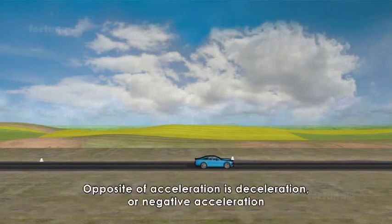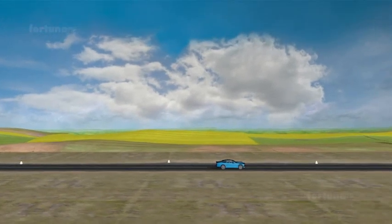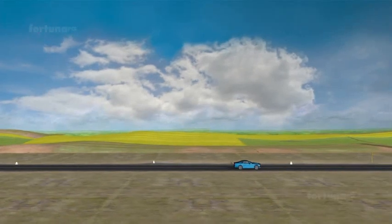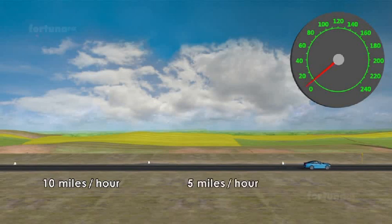The opposite of acceleration is deceleration or negative acceleration, which means we are decreasing the velocity. If the car begins its trip at a velocity of 10 miles an hour and ends at a velocity of 5 miles per hour, we would say the car has decelerated.